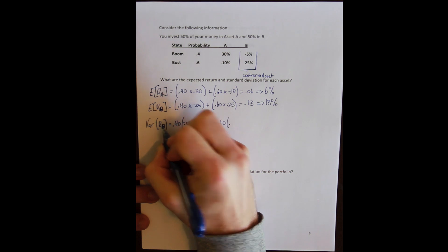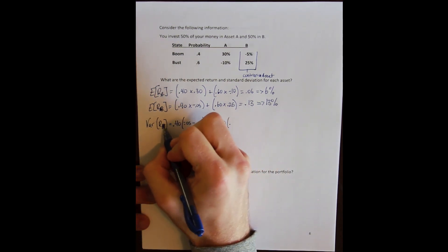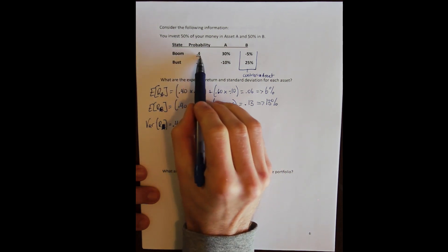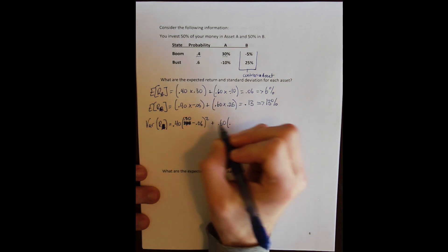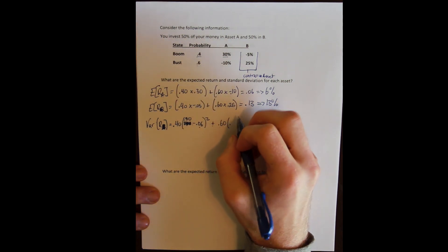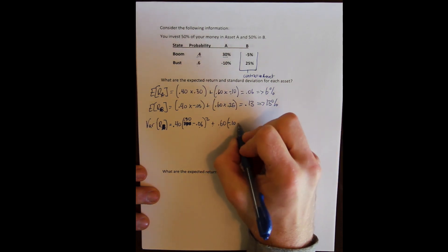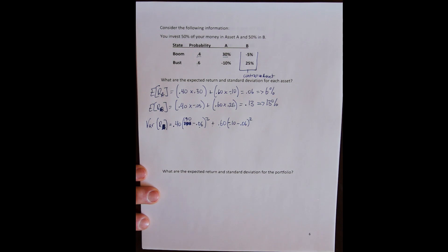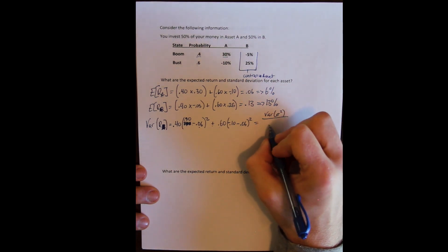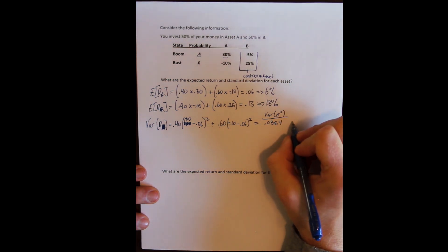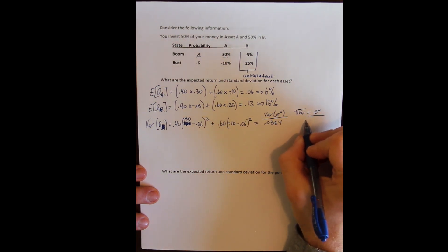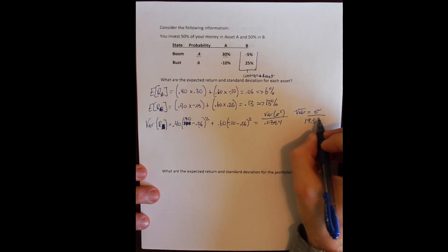For asset A: there's a 40% probability of the boom where the actual return is 30% minus the expected return of 6%, squared; plus a 60% probability of a bust where asset A loses 10% minus its expected return of 6%, squared. That gives a variance for asset A of 0.0384, and the square root — the standard deviation — is 19.59%.